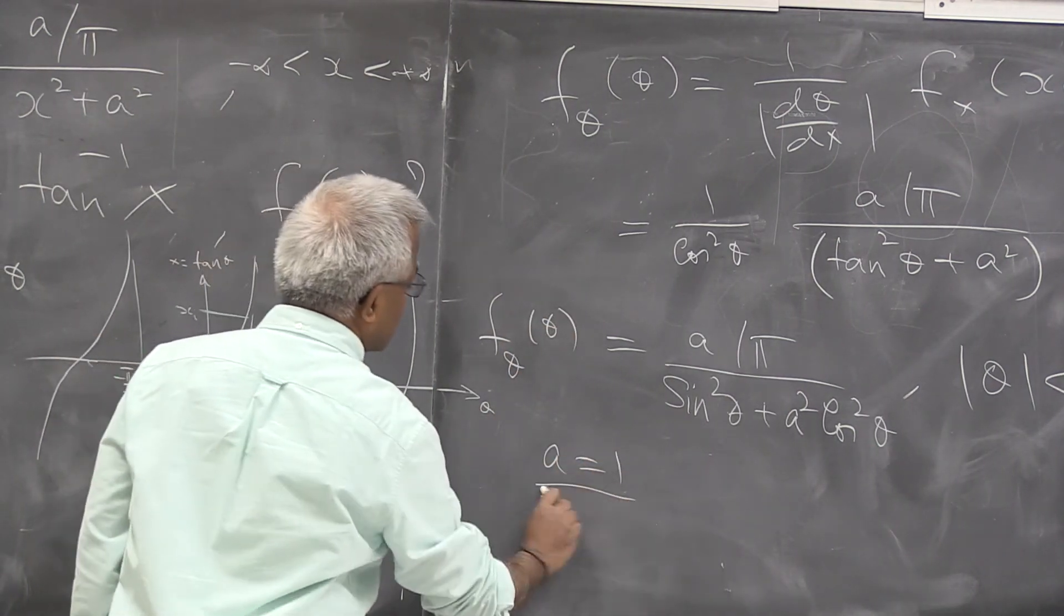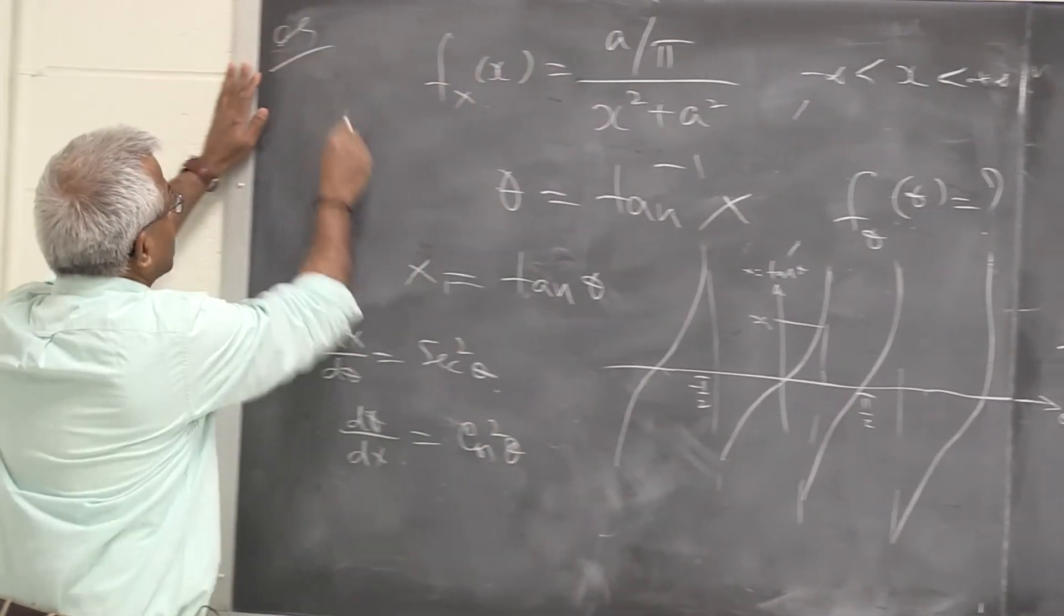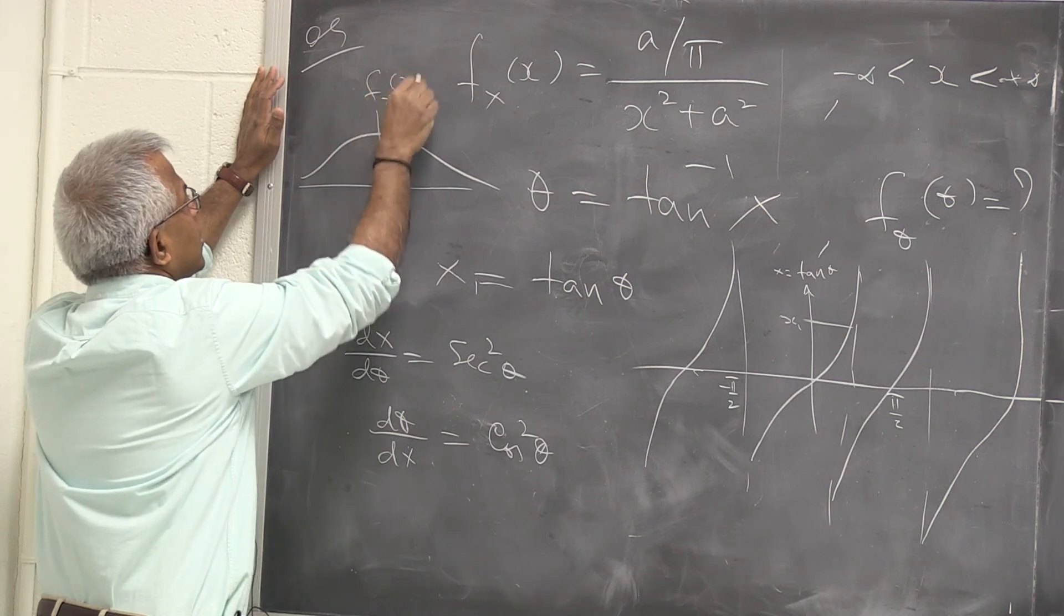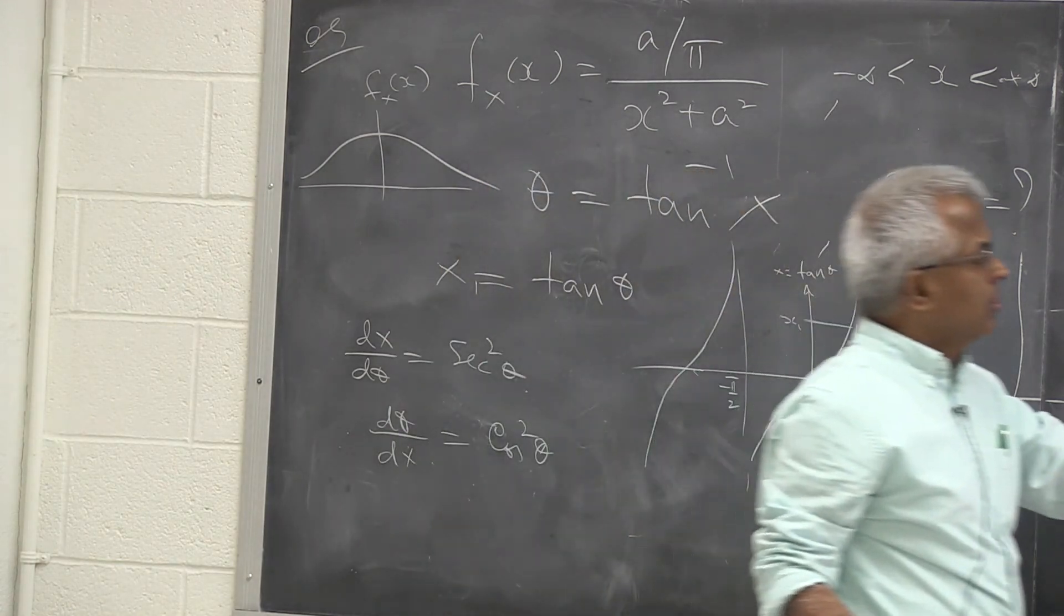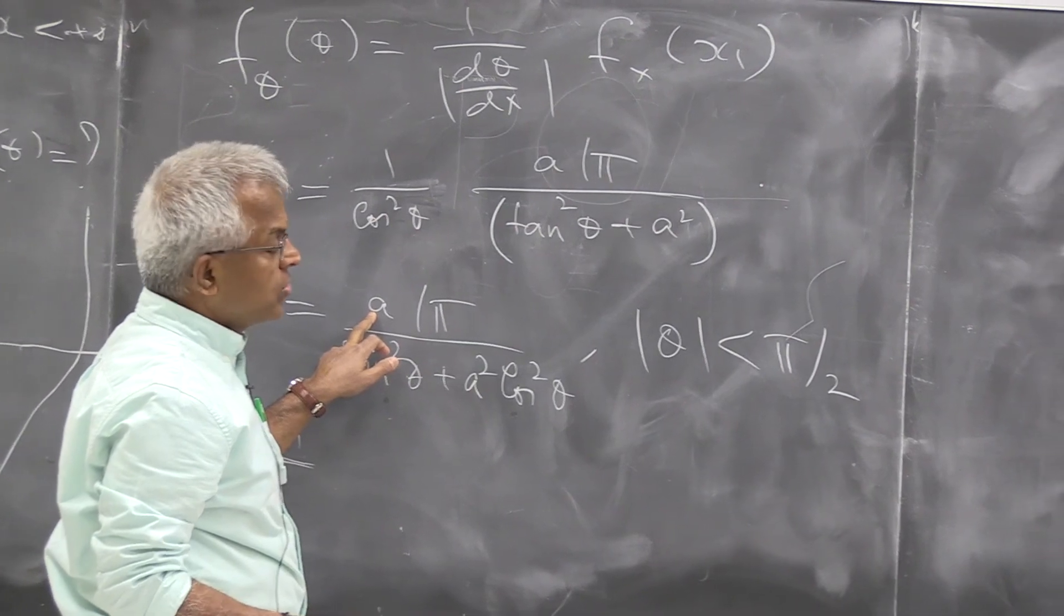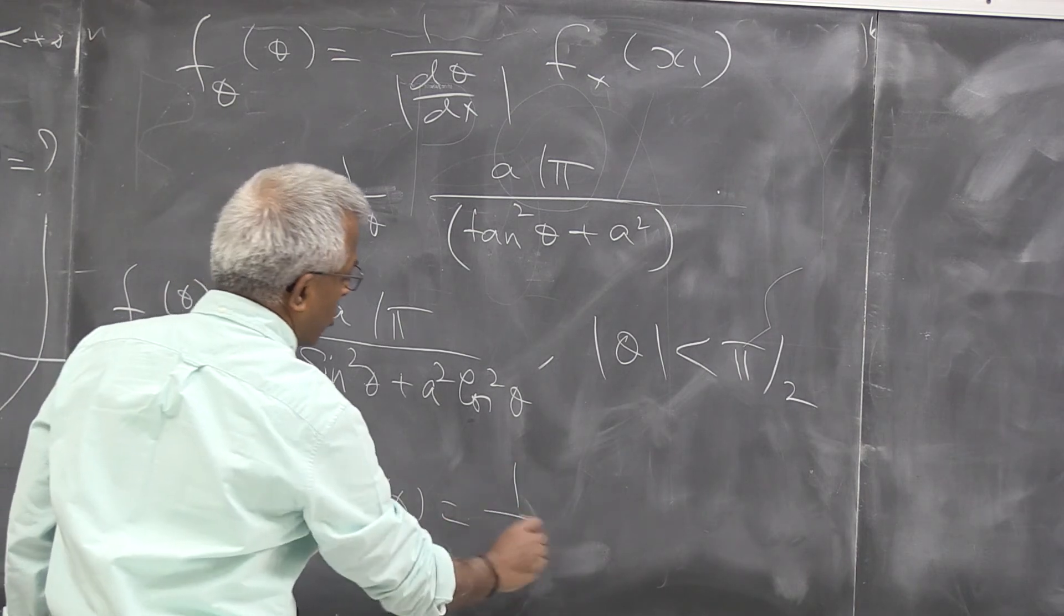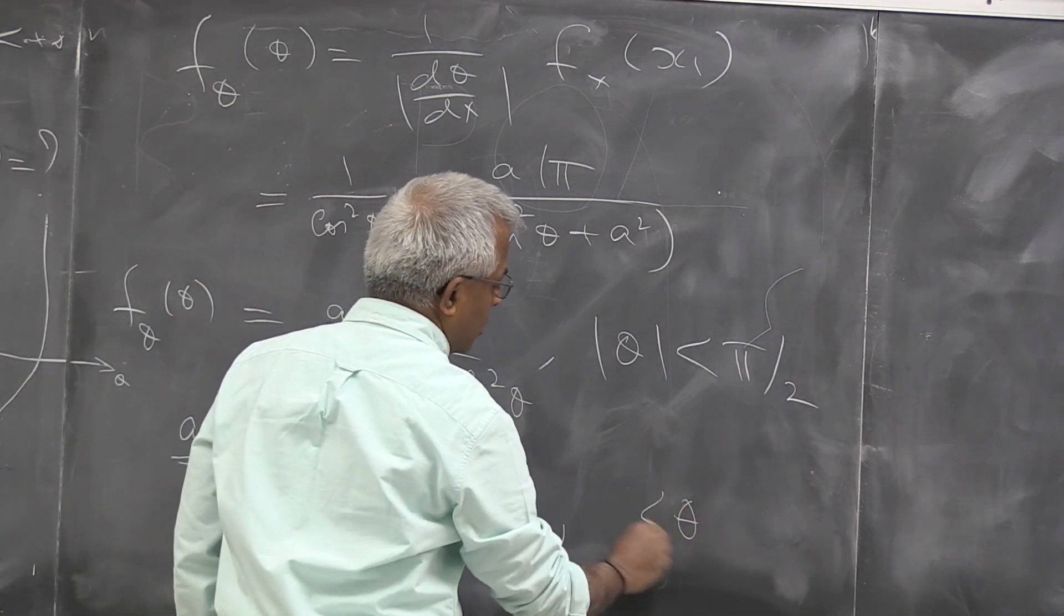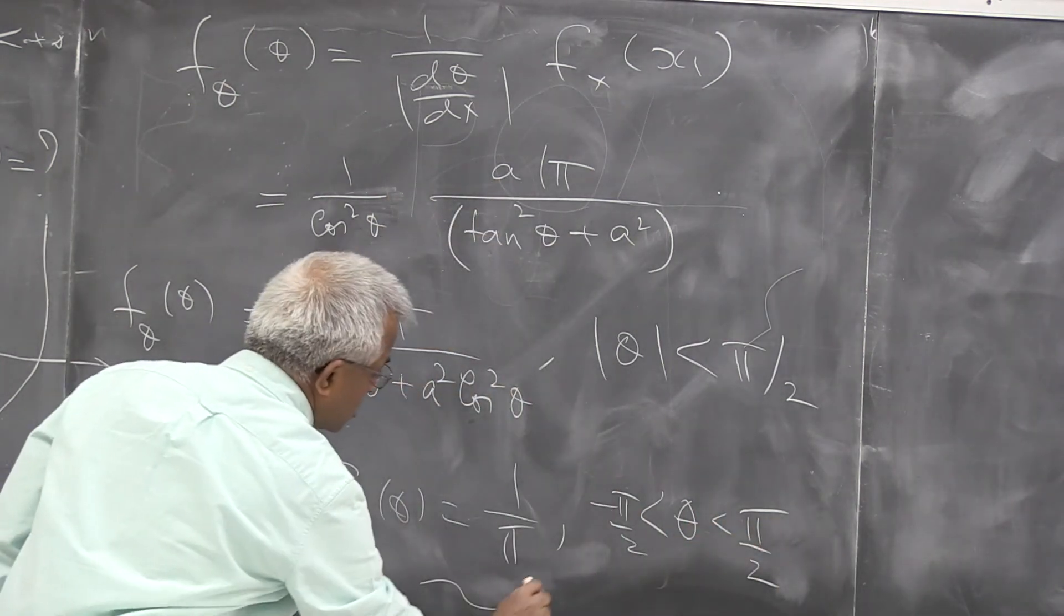There is a special case, interesting case, is when a equal to 1. Remember, this is Cauchy density function. So the Cauchy looks like this. This is f_x(x). So if a equal to 1, notice that this becomes sin squared plus cos squared. That's 1. And a is 1. So this is f_theta(theta) becomes 1 over pi, which is uniform for theta greater than minus pi by 2 to pi by 2. So this is a standard result.